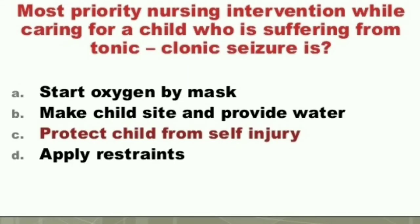Question: The most priority nursing intervention while caring for a child suffering from tonic-clonic seizures is: A) Start oxygen by mask, B) Make the child sit and provide water, C) Protect child from self-injury, D) Apply restraints. The correct answer is C) Protect the child from self-injury.